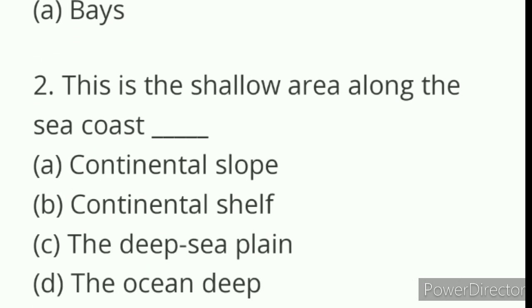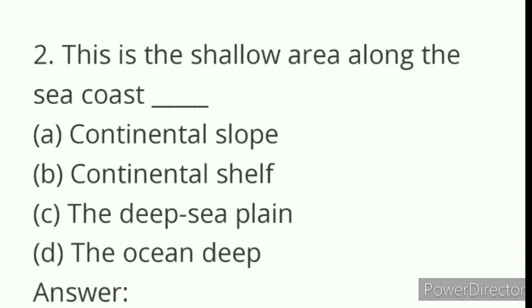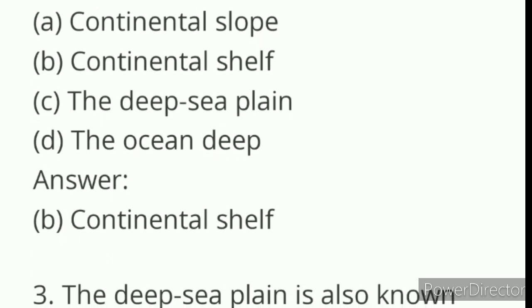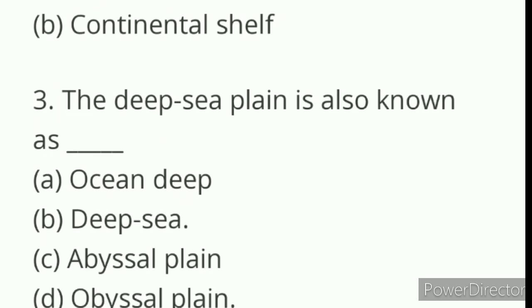Number two: this is the shallow area along the seacoast. Options are A. Continental slope, B. Continental shelf, C. The deep sea plain, D. The ocean deep. Answer is Continental shelf.